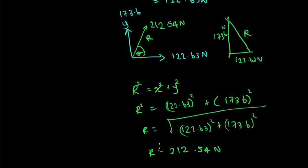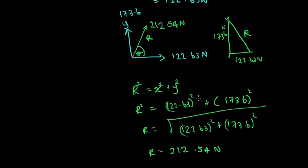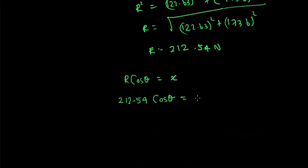R means 212.54. So, 212.54 cos theta is equal to 122.63.